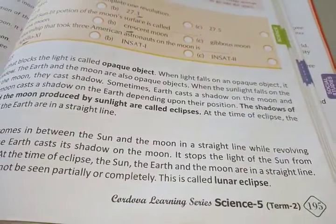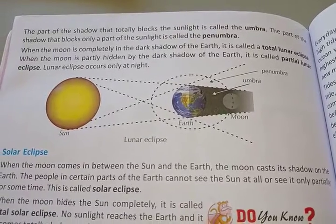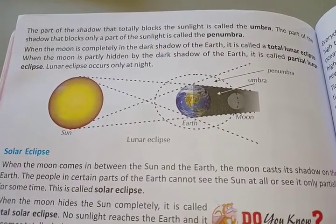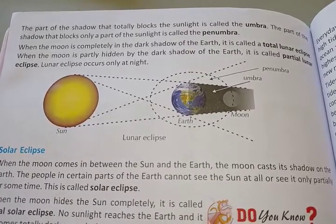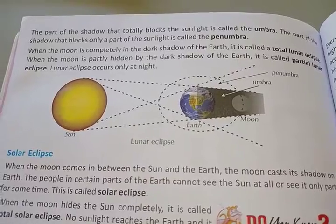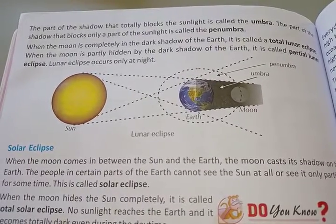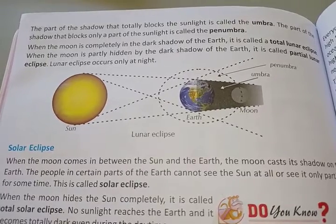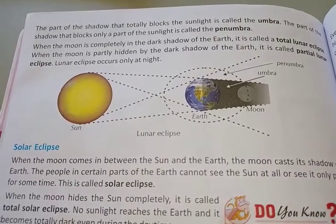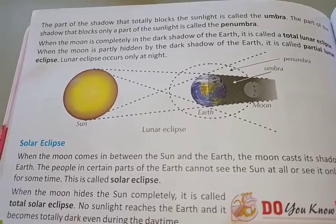The part of the shadow that totally blocks the sunlight is called the umbra. The part of the shadow that blocks only a part of the sunlight is called the penumbra. When the Moon is completely in the dark shadow of the Earth, it is called a total lunar eclipse. When the Moon is partly hidden by the dark shadow of the Earth, it is called a partial lunar eclipse.